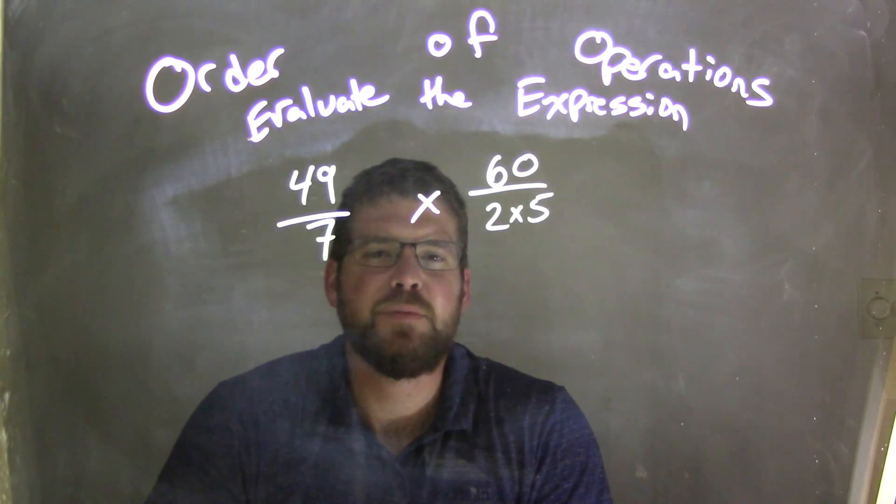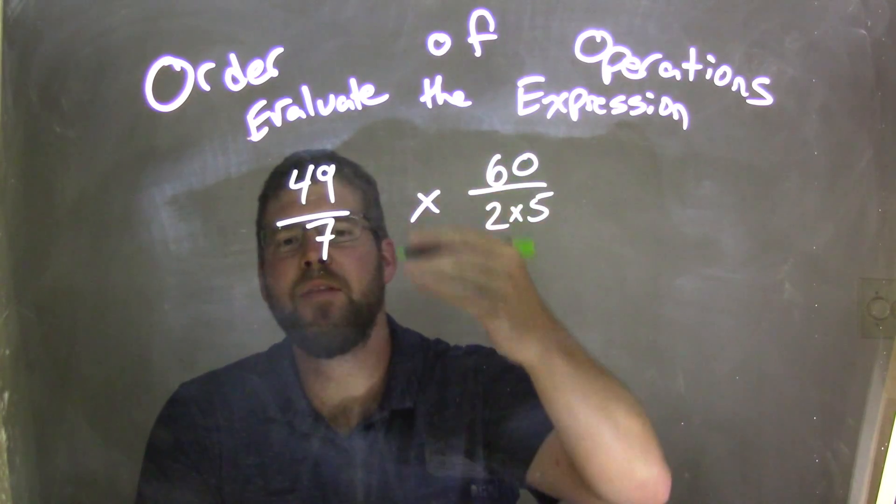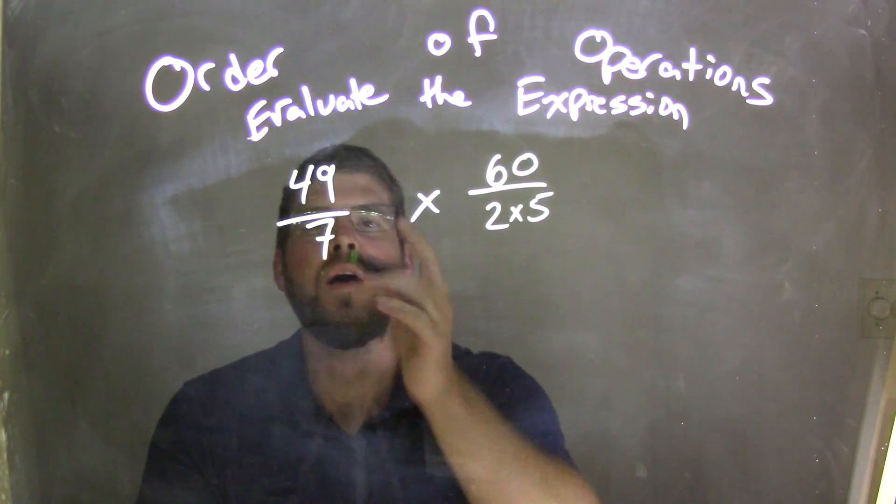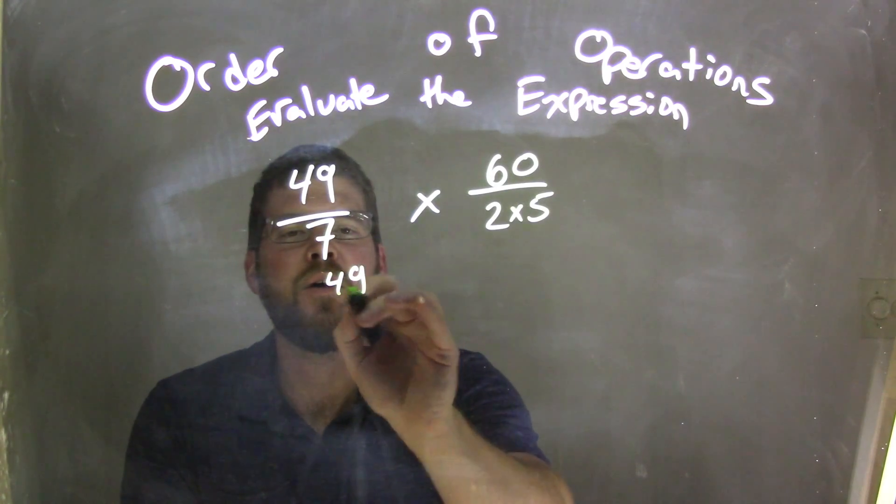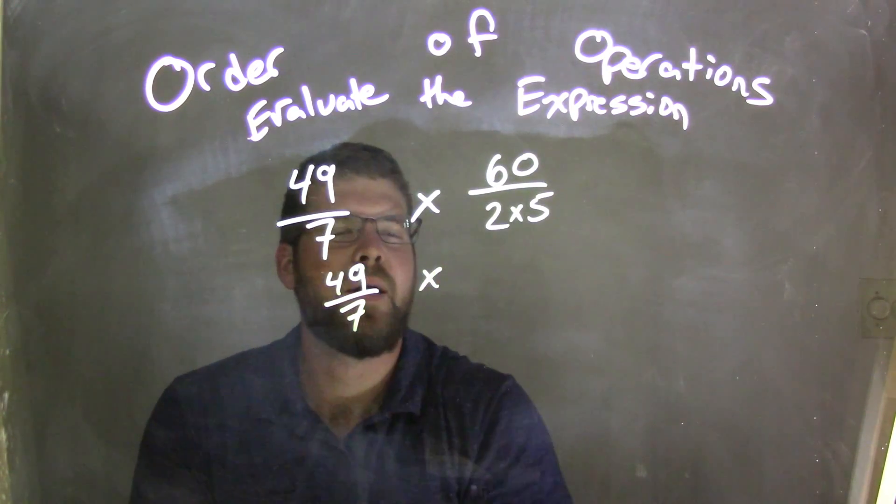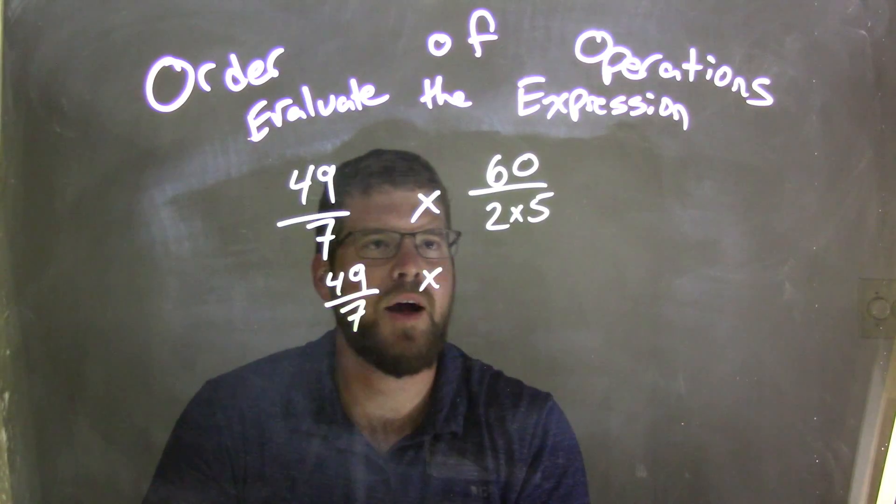We want to simplify the numerator and the denominator of each one here. So the left side, this time I'm not going to skip too many steps. I'm going to put the 49 over 7, and I'm just going to leave that there. And I'll multiply that by, well,